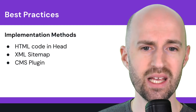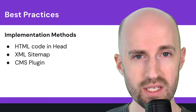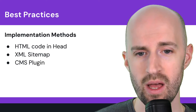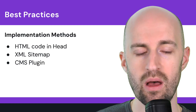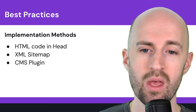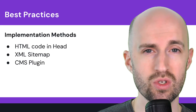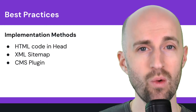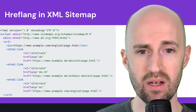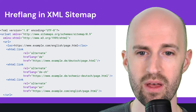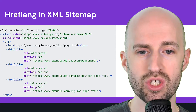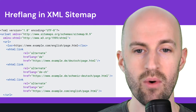Let's talk about implementation methods. How do we actually install hreflang on the site? There are different methods: you can do it manually by placing HTML code in the head section of the page, you can use an XML sitemap that includes the hreflangs, or you can use a CMS plugin — if you use WordPress, Squarespace, Wix, or Shopify, a multilingual plugin will automatically add the hreflang tags correctly. Here's an example of an XML sitemap showing hreflang versions, with a German version, a Swiss German version, and an English version.